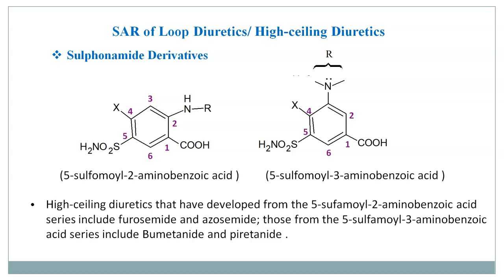The high-ceiling diuretics developed from the 5-sulphonamide 2-amino benzoic acid series include furosemide and azosemide, while those from the 5-sulphonamide 3-amino benzoic acid series include bumetanide and piretanide.